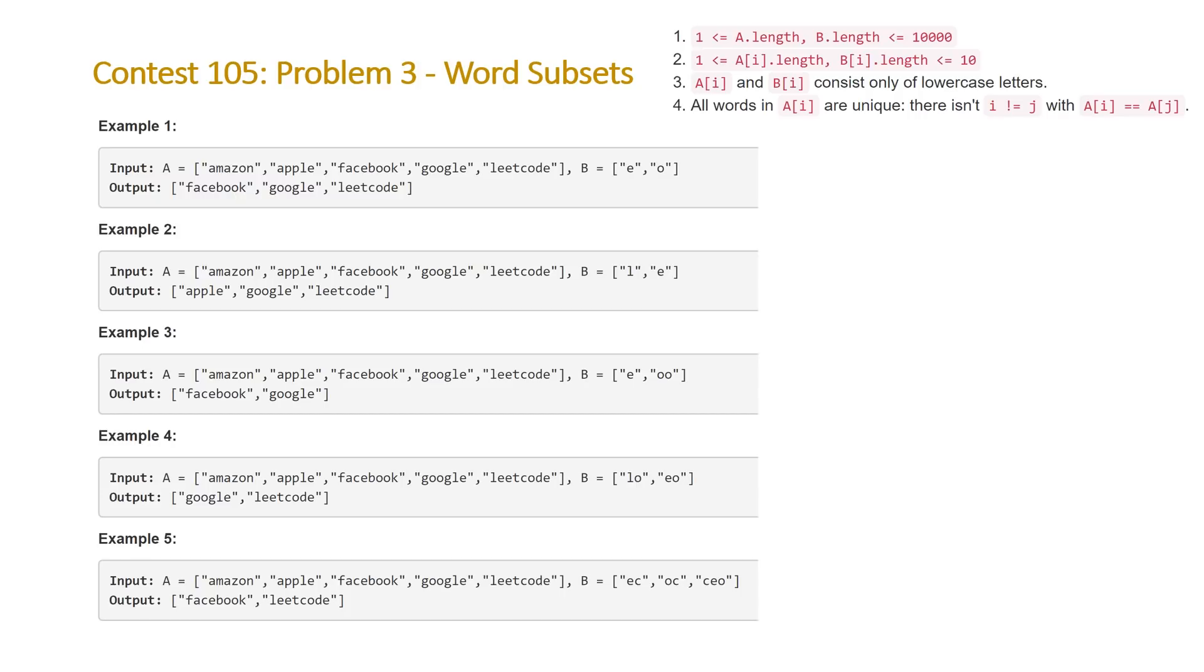So we need to be a little bit smarter in terms of solving this problem. So what we're going to do in order to solve this problem is basically combine all of our strings in B into a single, we'll call it string, but really, it's just a character count. So what it would end up looking like is we would initialize a vector or an array, depending on the language you're using. And initially, each of the character counts, so this will be a vector of length 26.